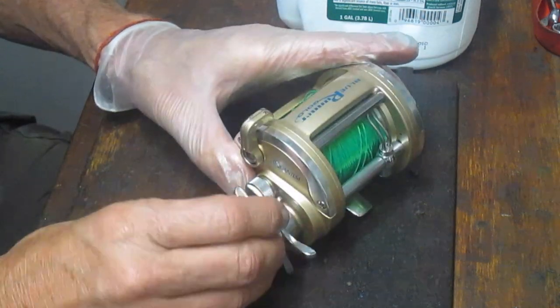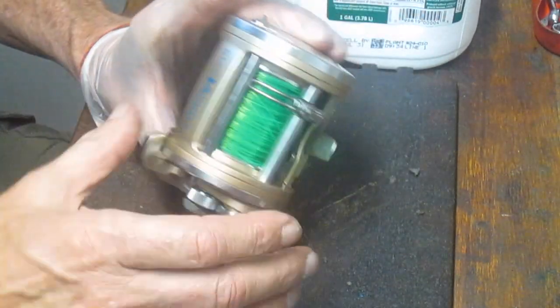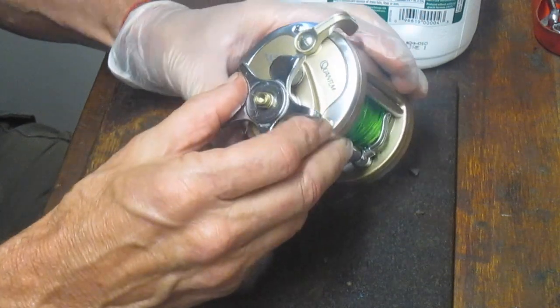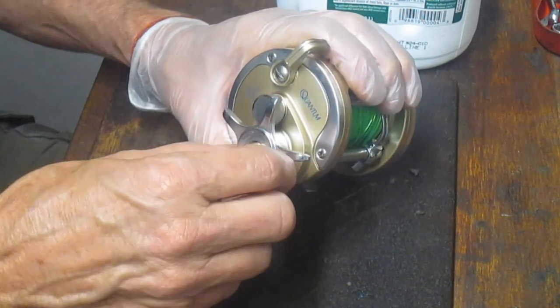So we'll take the handle off, the handle screw, and then we'll take this trim ring off. Quantum is part of that group of companies that's in the Zebco line. So you have Zebco, Quantum, Rhino, Finor, and Van Stahl.